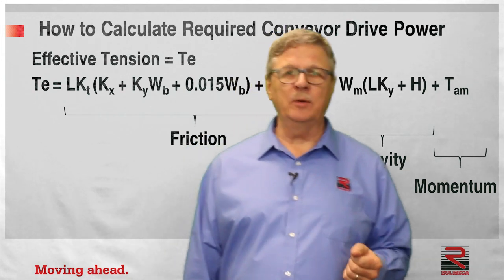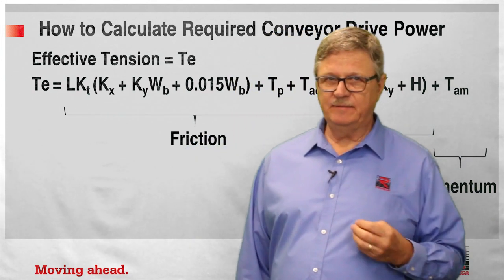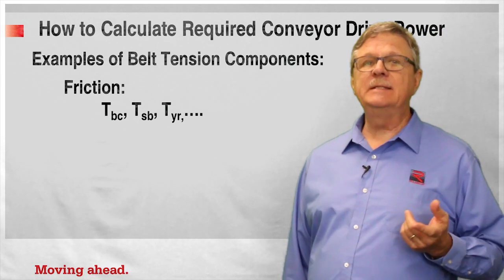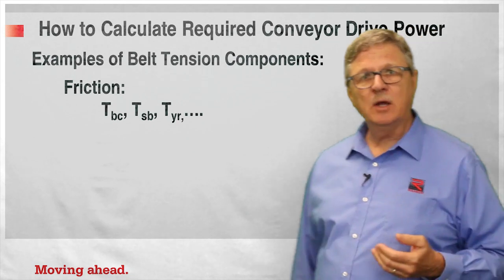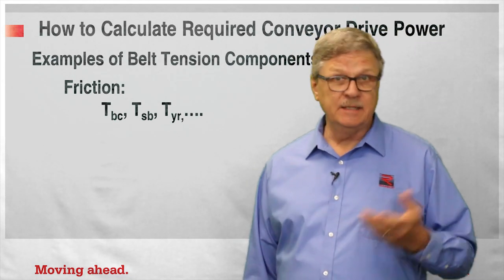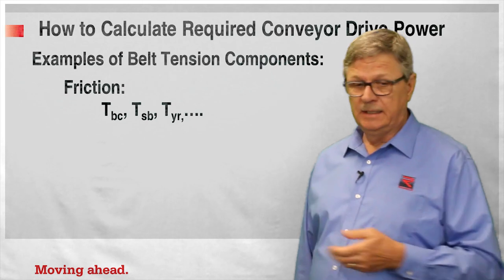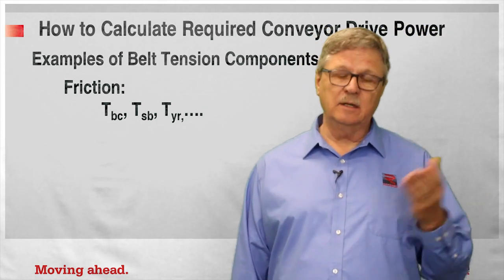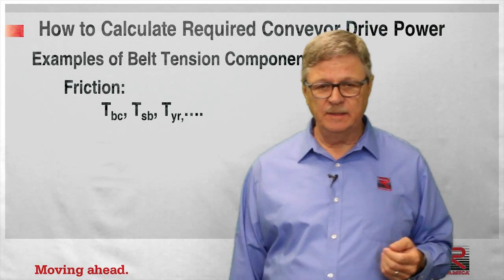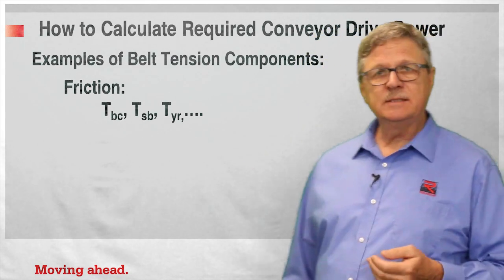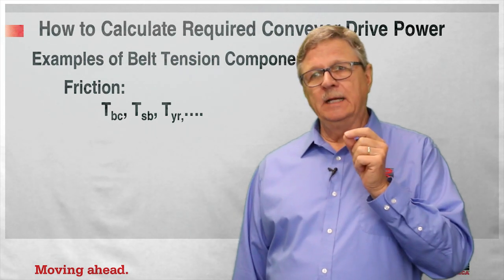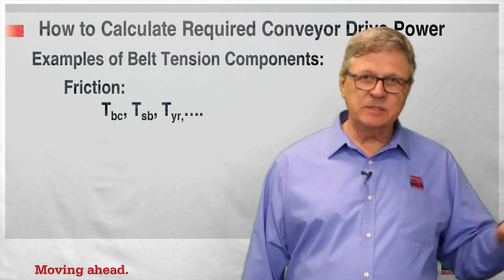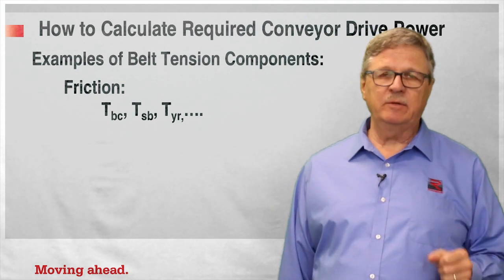Some of the friction components consist of TBC, the tension required to overcome belt cleaner drag — the subject of another Romeka video. TSB is the tension required to overcome skirt board drag, also the subject of a separate video. TYR is the tension required to overcome friction in the bearings of the return rollers as the empty belt travels over the return strand.